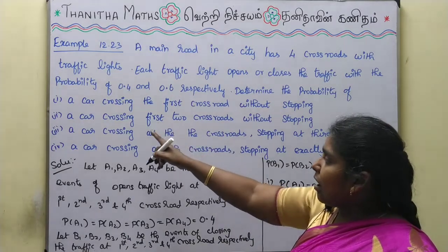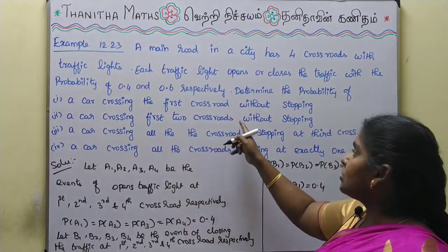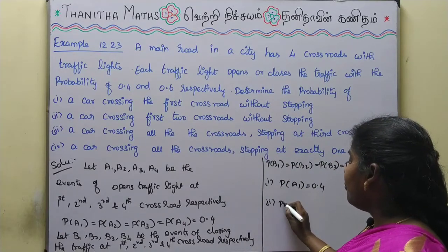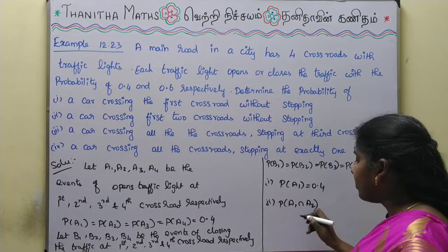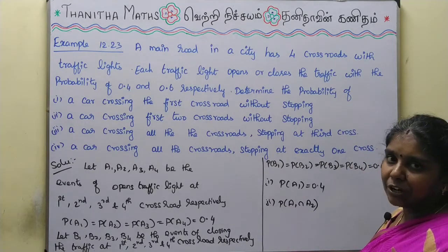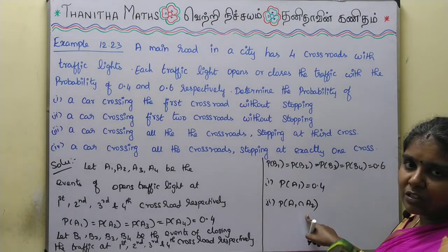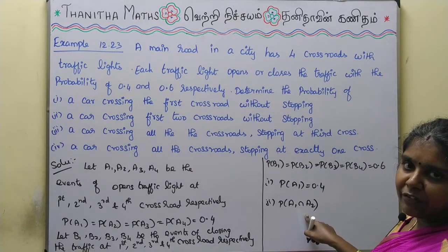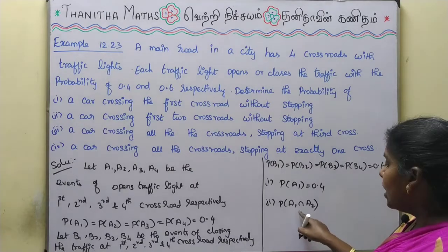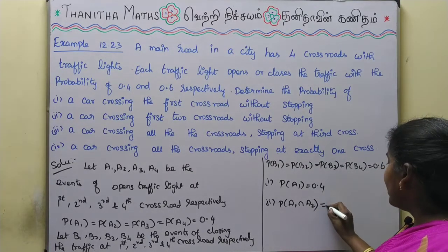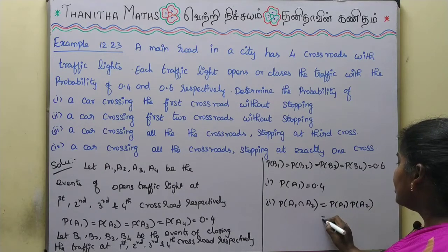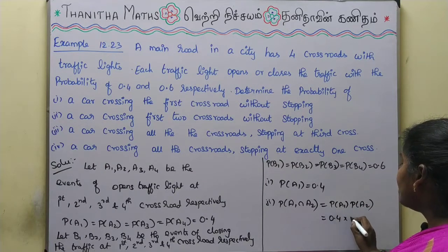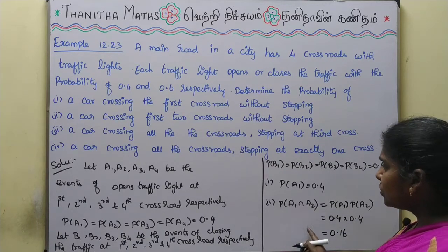For the 2nd question — a car crossing the first two crossroads without stopping — the traffic light must be open at the 1st road and also open at the 2nd road. So the probability is P(A1) × P(A2) = 0.4 × 0.4 = 0.16.